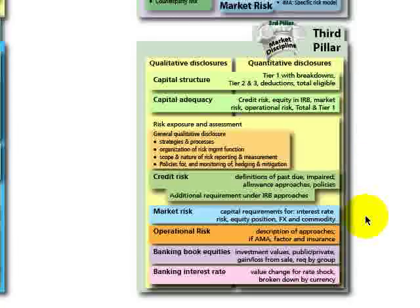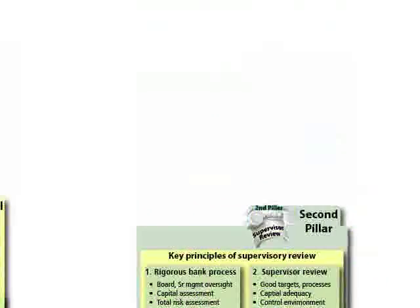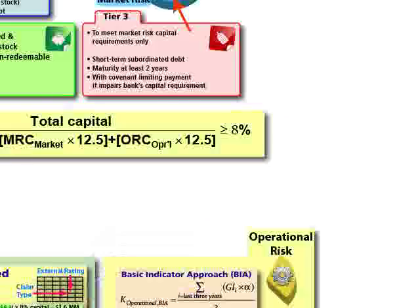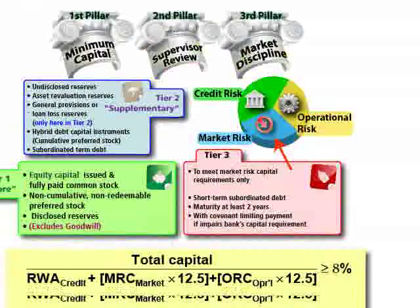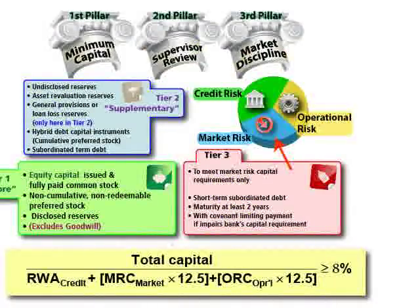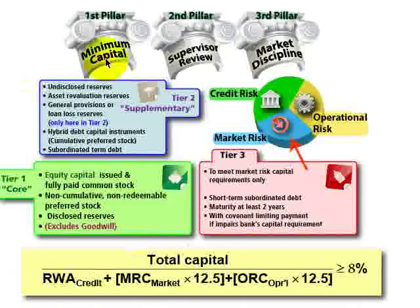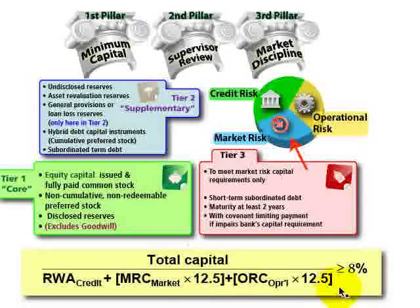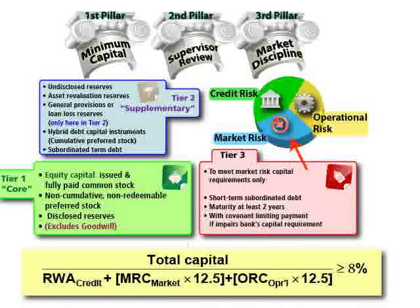Those are the three pillars that anchor the Basel II framework and help ensure that the bank holds at least 8% of eligible capital against its three major risk buckets. This is David Harper of the Bionic Turtle — thanks for your time.